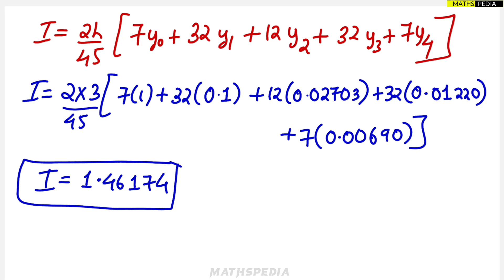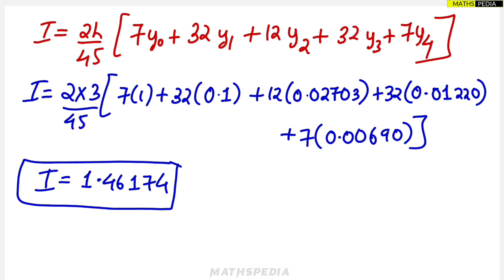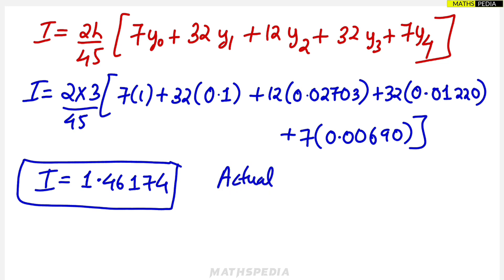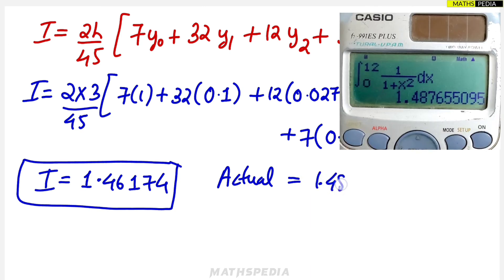The value of I we are getting is approximately 1.46174. Regarding decimal places, if the question specifies 5 decimal places take 5, if 4 decimal places take 4; otherwise take at least 4 decimal places for more accurate results. Note that this is an approximate value — Boole's Rule, like the trapezoidal rule, Simpson's one-third, three-eighth rules, gives an approximation. The actual value using a calculator is approximately 1.48765, so there is a slight difference between the actual value and the value obtained using Boole's Rule.